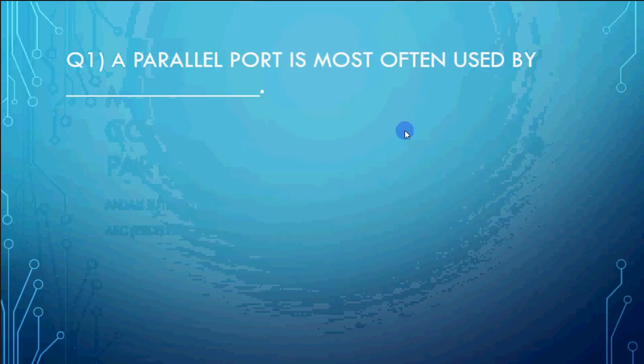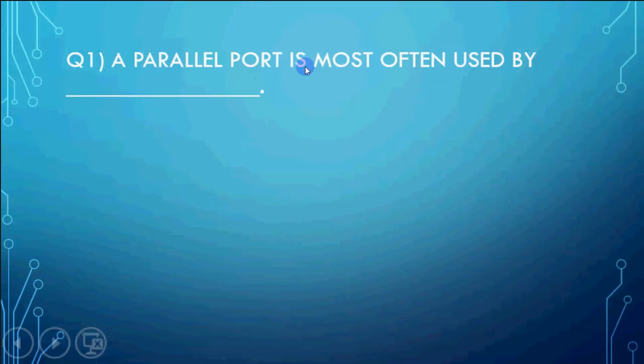So first question: A parallel port is most often used by - mouse, a monitor, a printer or a keyboard. What does a parallel port mean? Parallel port means where the data is transmitted parallelly, means I can connect more than one device. Do you connect one computer with more than one mouse? Usually not.